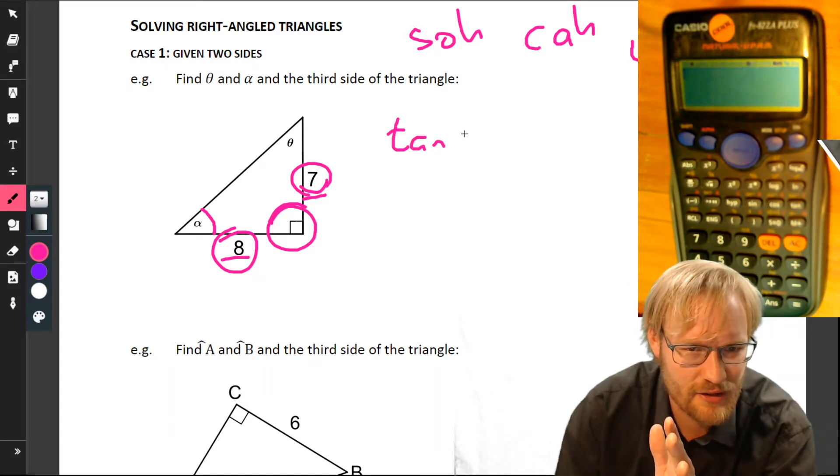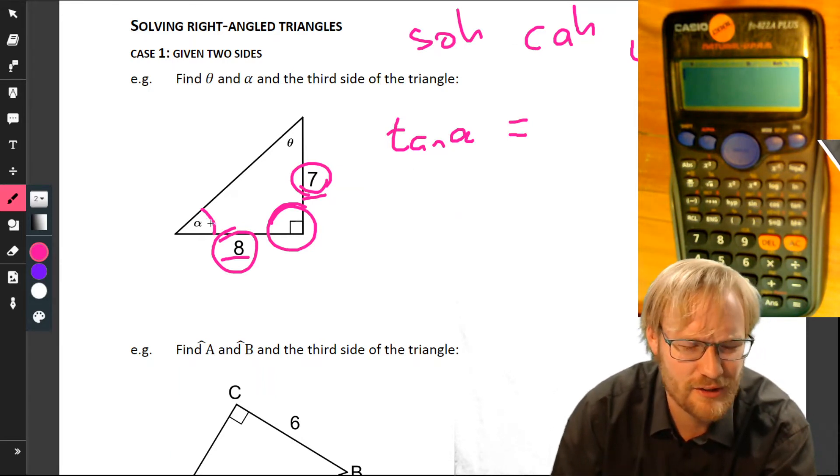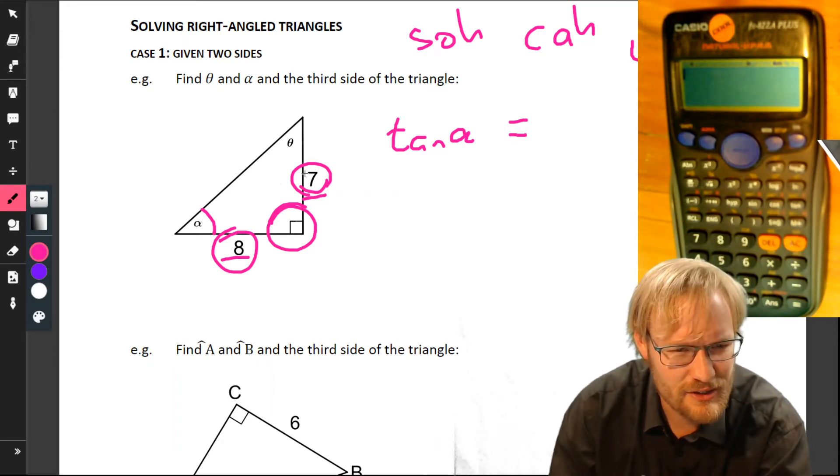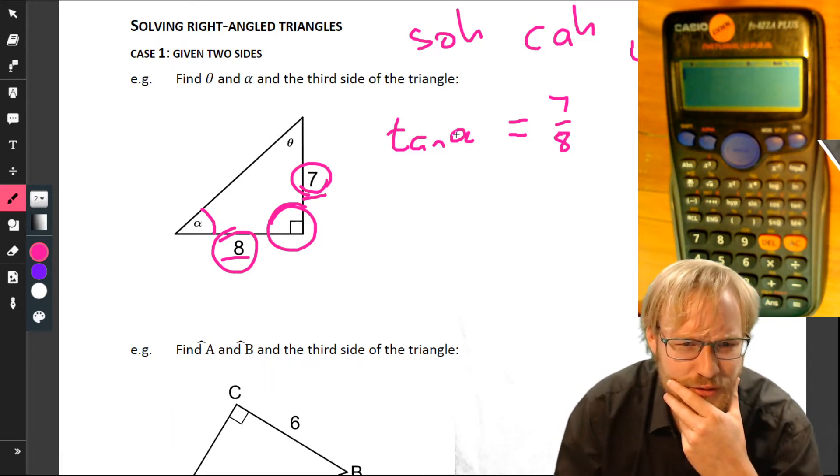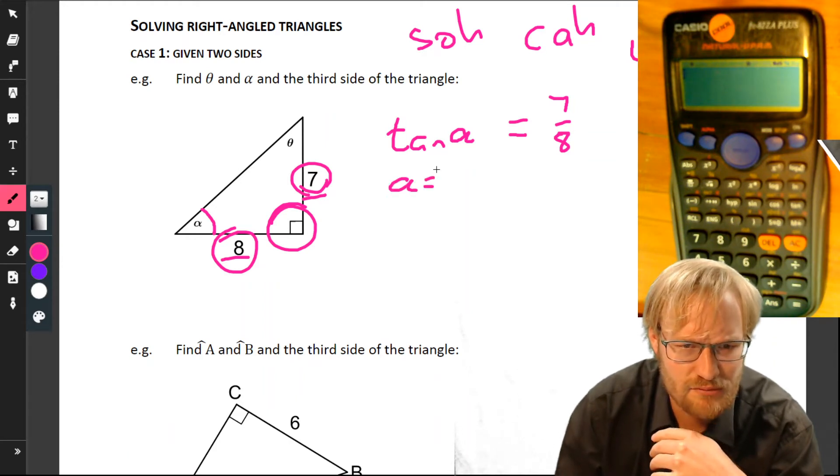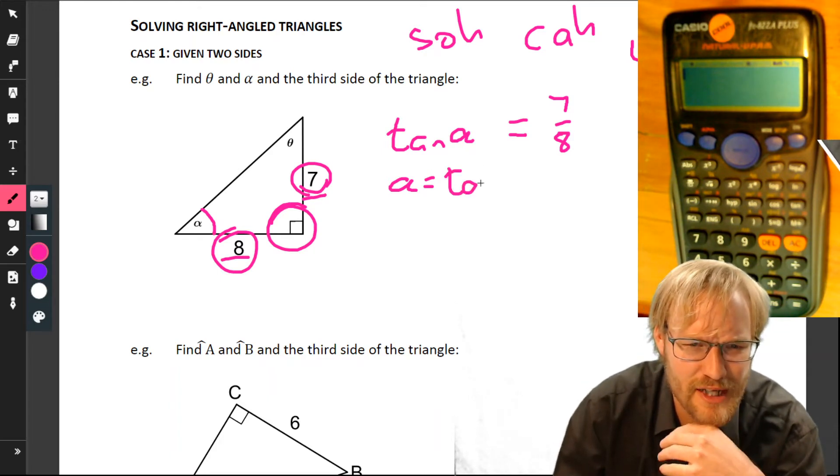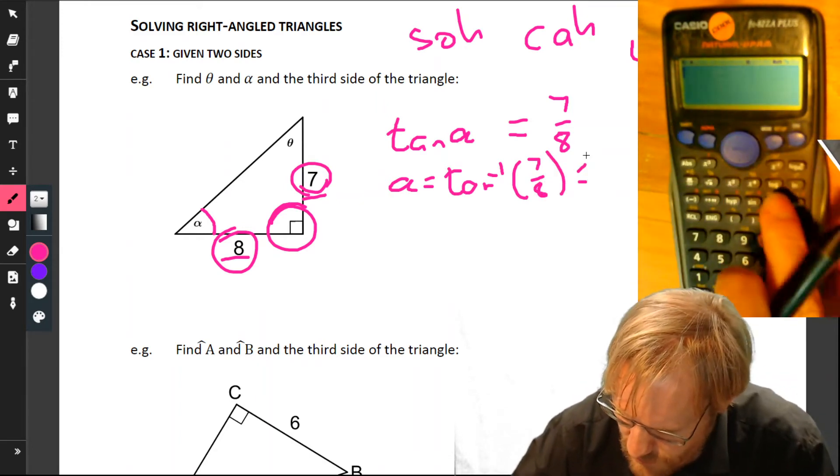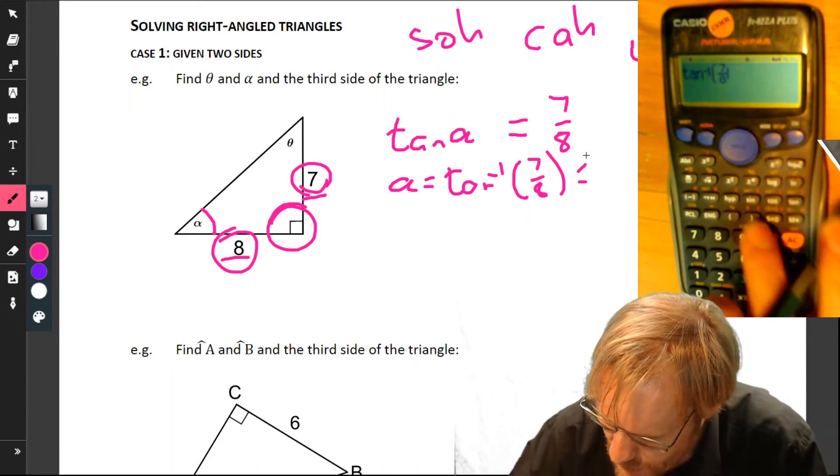If we take the tan of alpha, it has to be tan of alpha. Don't write just tan—tan of what? It has to be tan of an angle. So tan of alpha is opposite over adjacent, which is 7 over 8. Therefore, if we want to find alpha, we're going to do that shift thing, the inverse of tan. So we're going tan to the minus one of 7 over 8.